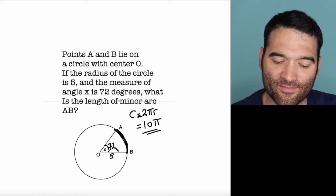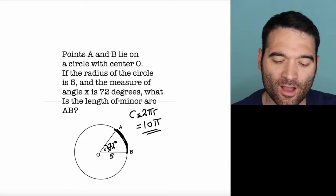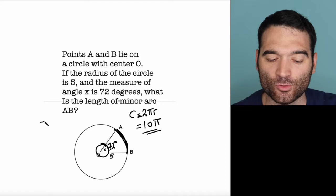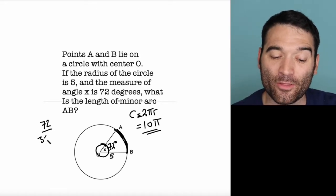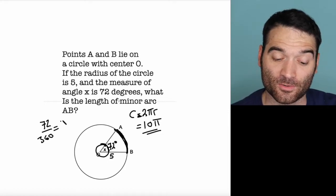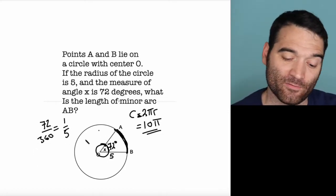I'm talking about a 72 degree angle right there. What fraction of the whole circle is this? Well, 72 out of 360, because there are 360 degrees in a circle, comes out to 1 fifth. So I'm talking about 1 fifth of the circle.